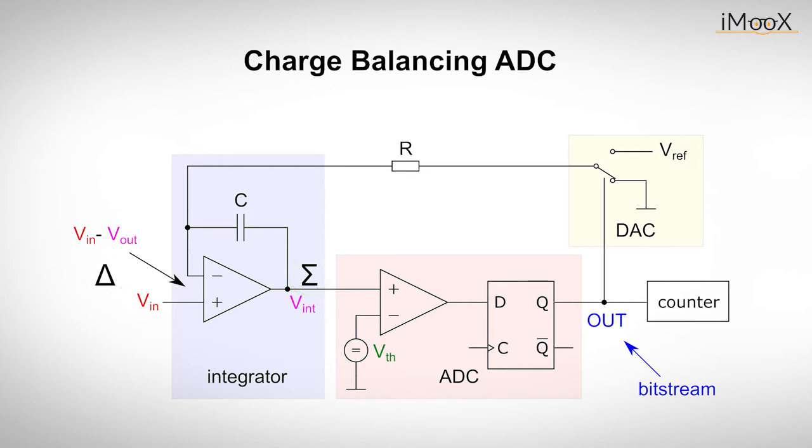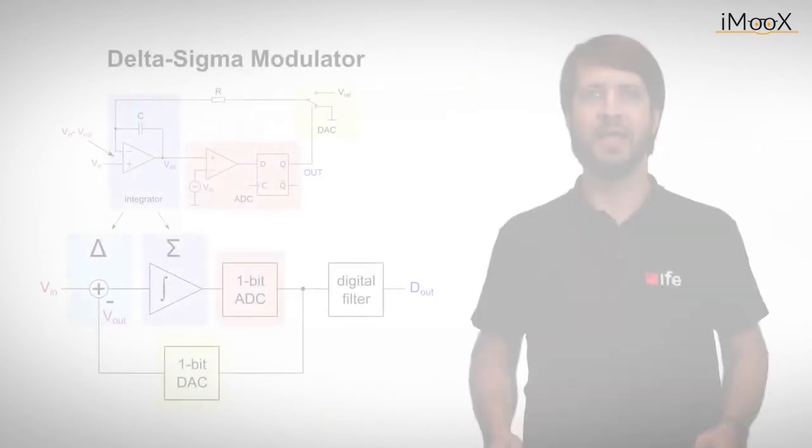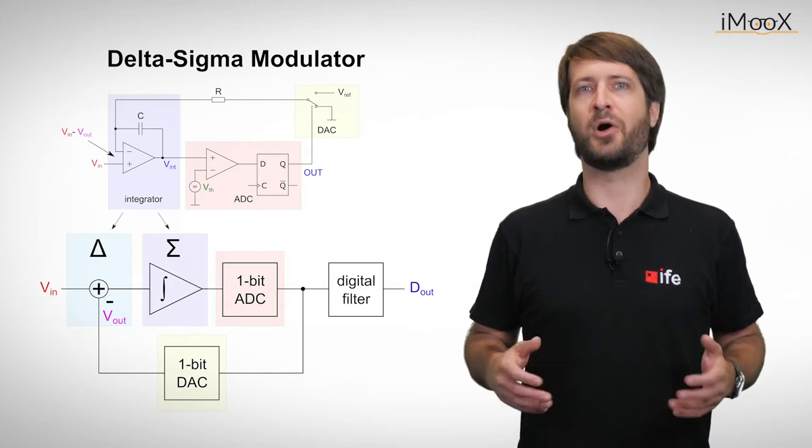In practice, Vref is often replaced by either a precision current source or a digital-to-analog converter that switches between two voltages, for example 1 and minus 1 volts. To better understand this circuit, we can also simplify it by eliminating the output counter and splitting the differential amplifier and integrator. In this representation, we get a first-order delta-sigma modulator.